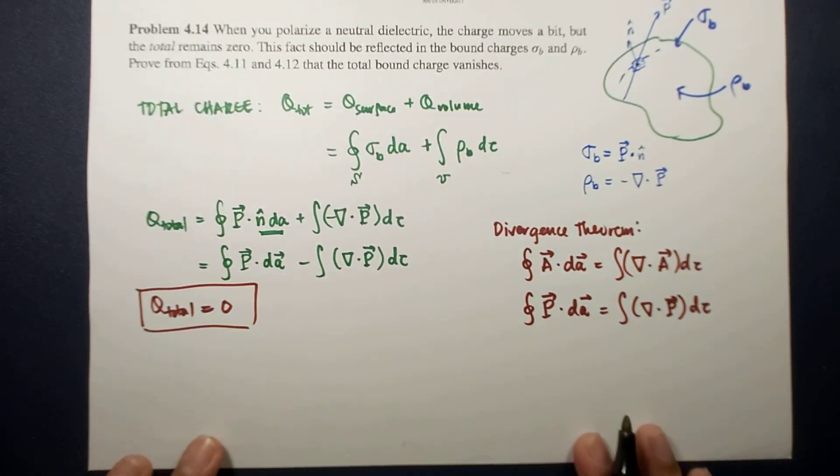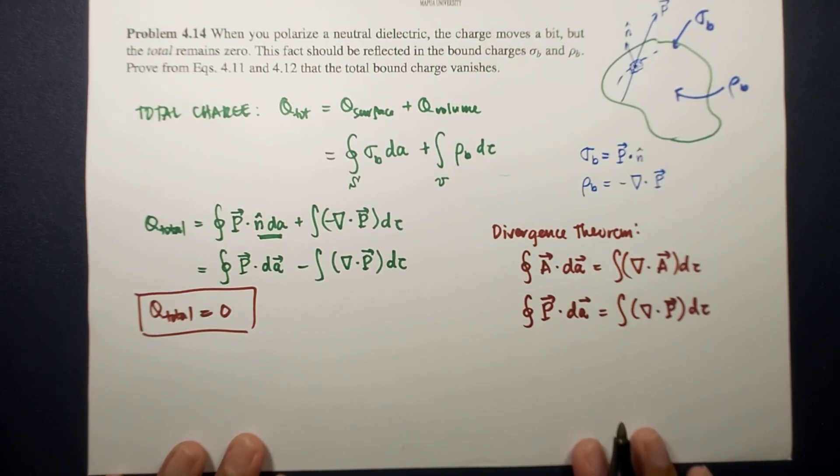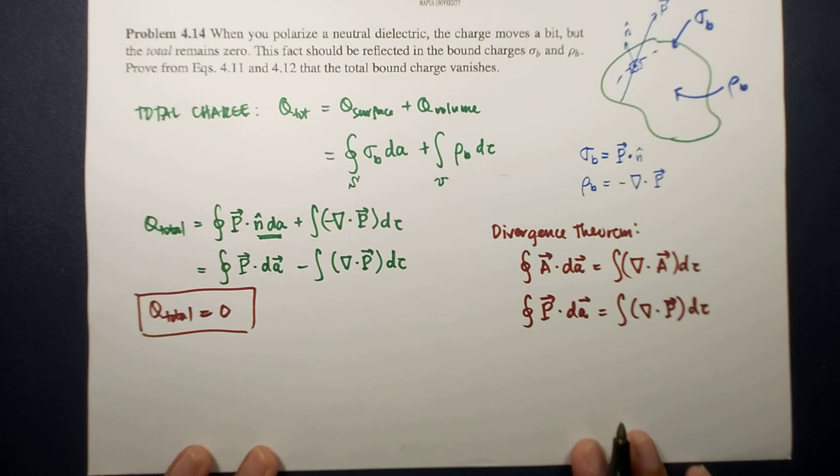This solves our problem wherein even if in a polarized neutral dielectric where the charges move due to the polarization or by virtue of the polarization, the total charge within that material will remain zero.